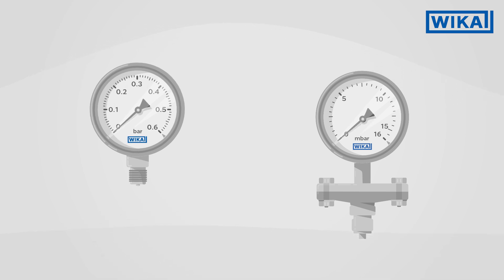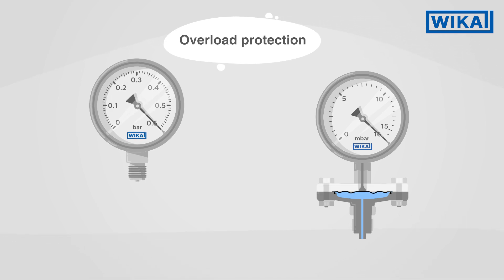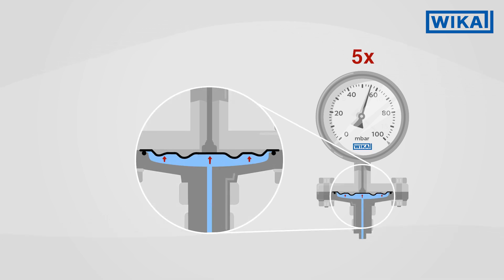Diaphragm pressure gauges offer good protection against overload, since the diaphragm can support itself against the upper flange. WIKA diaphragm pressure gauges offer five times the overload protection as standard ones. Optionally, even much higher overload safeties can be realized.